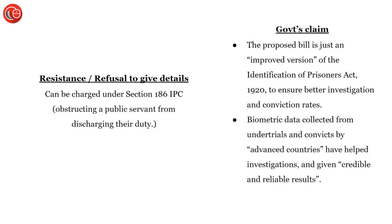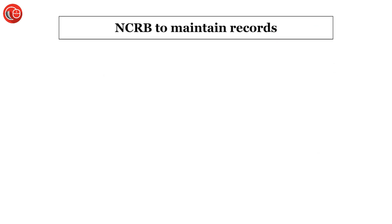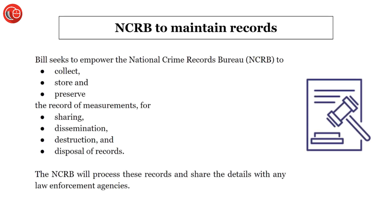Coming to the second part related to NCRB — the data will be collected by government agencies such as investigating authorities, police, and prison authorities. However, the responsibility for maintaining this data will rest with the NCRB — National Crime Records Bureau. Collecting, storing, and preserving this data will all be done by the NCRB.